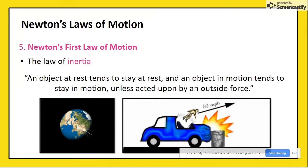They continue moving at 60 miles per hour until something stops them. Hopefully, that's the seatbelt. If the passenger isn't wearing a seatbelt, then the next outside force they will encounter will likely be the windshield.